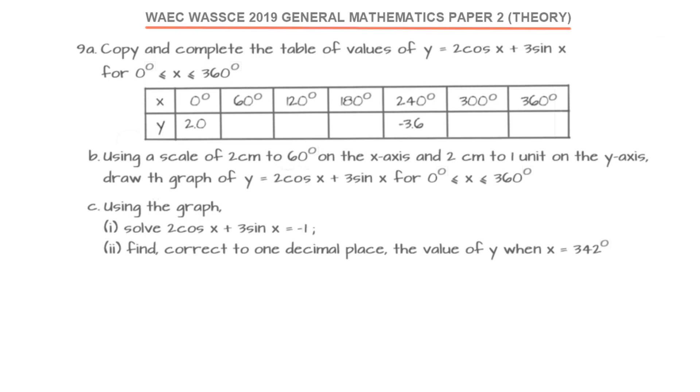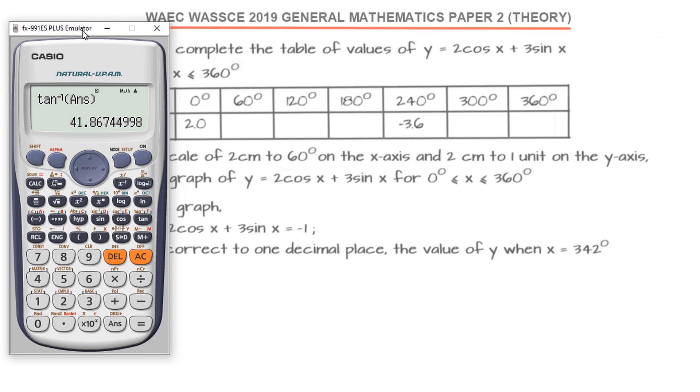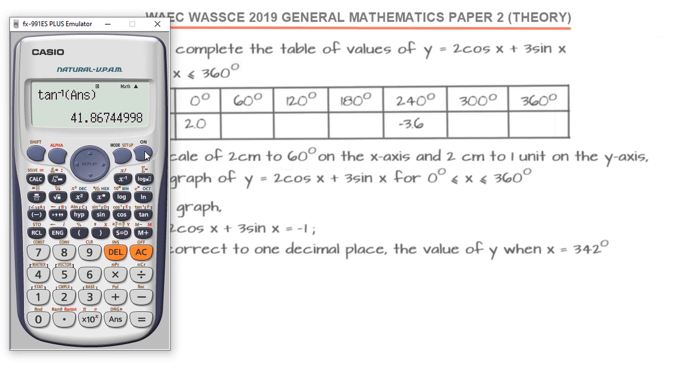This is a question on trigonometric function graphs. We are told to copy and complete the table of values for y = 2cos(x) + 3sin(x) where 0° ≤ x ≤ 360°. You can do it piecewise to fill in the table by using the calculator.